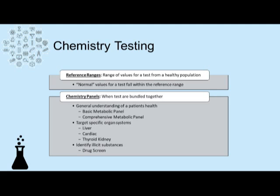Reference ranges in the chemistry department are values from a healthy population, and each clinical chemistry test has a reference range assigned to it. These tests are often bundled together in panels. If a practitioner wants to get an idea of the health of the liver or heart of a patient, they can bundle tests together to get a general idea using more than one test.